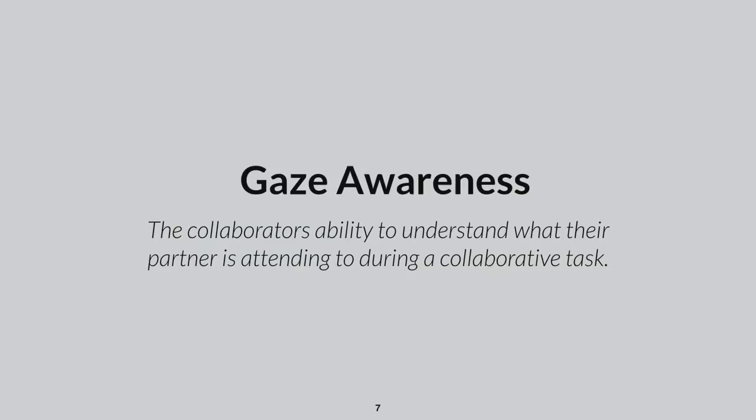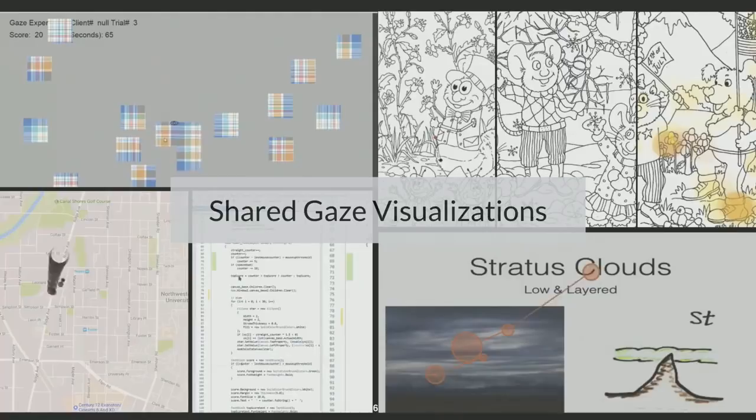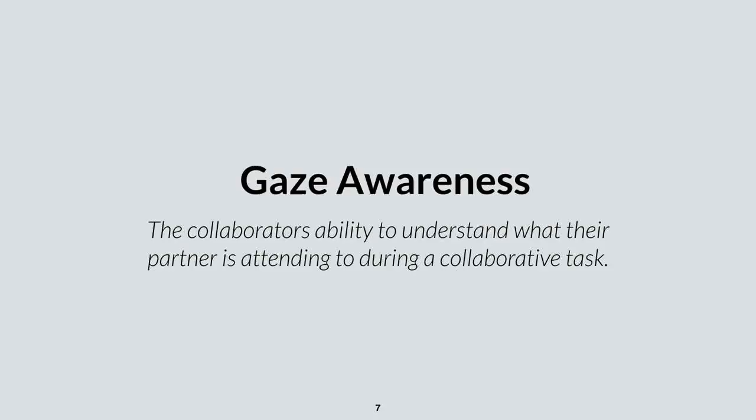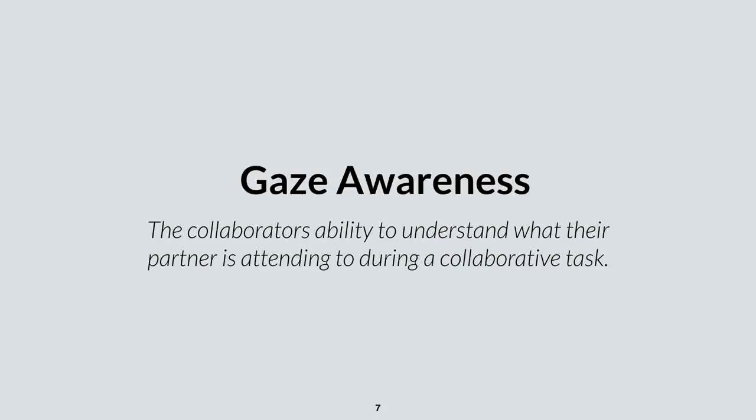What I'm trying to achieve with these shared gaze visualizations is to support gaze awareness — the collaborators' ability to understand what their partner is attending to during a collaborative task with a shared visual space. This is important for supporting fundamental features of communication and coordination like establishing joint visual attention. For example, if I ask you all to look at the outlet in the back, some of you will look back there. You'll probably check where I looked first, and then look there too — we'll have established joint visual attention on that object.